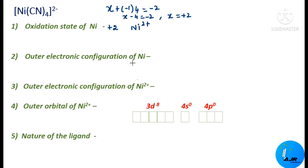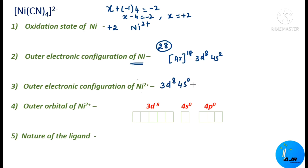We are going to write the outer electronic configuration of Ni for this complex. As already explained, it is [Ar] 3d⁸4s², and for Ni²⁺ it is 3d⁸4s⁰ and 4p⁰ — the same case. Writing the outer orbital of Ni²⁺ with 8 electrons based on Hund's rule: accommodating 5 singly, then pairing the 6th, 7th, and 8th. Here also we have 2 unpaired electrons.